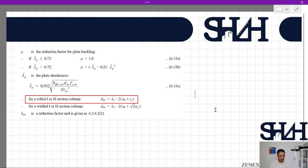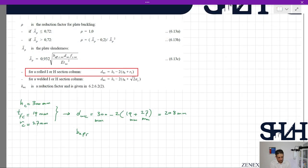We check if λ̄p is less than 0.72; then ρ will be 1. Otherwise, it will be calculated with equation 6.13b. For dwc: h of the column is 300 millimeters, tf of column is 19 millimeters, and root radius is 27. So dwc = 300 - 2×(19 + 27) = 208 millimeters. beff,c,wc we already calculated as 272 millimeters.